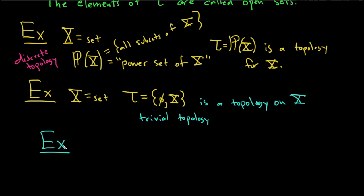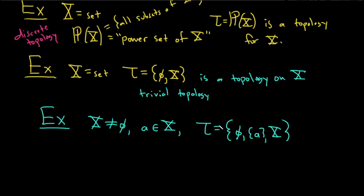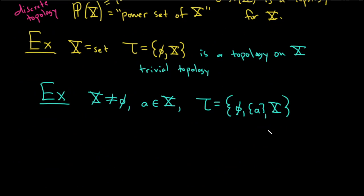Here's another example. Let X be a non-empty set, and let little a be an element of capital X. Define tau as the collection containing the empty set, the singleton set {a}, and the entire space X. This is a topology on X: it contains the empty set and capital X satisfying the first condition; any intersection of elements stays in tau; and any union of elements is also in tau.